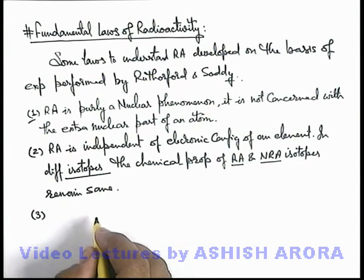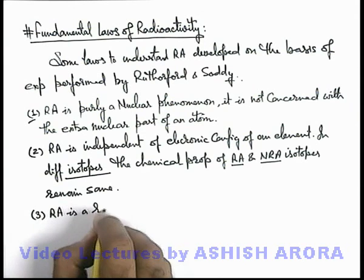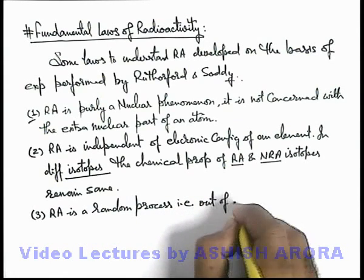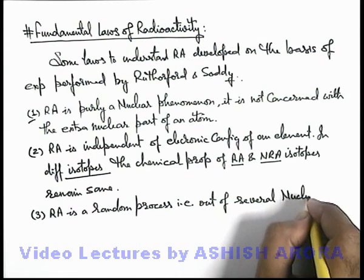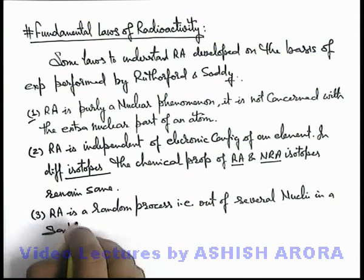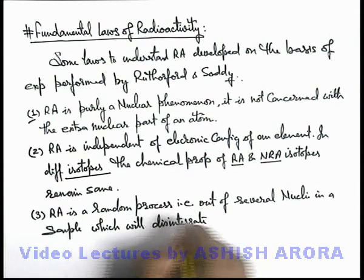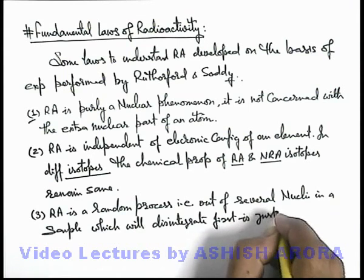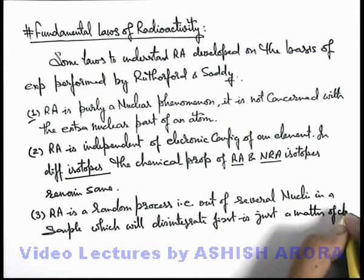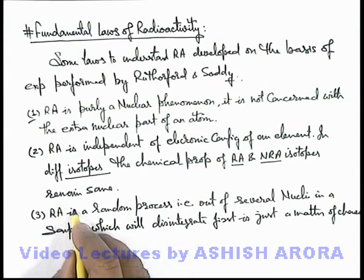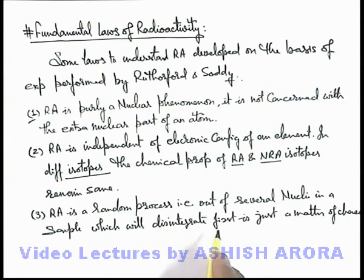Point number 3: radioactivity is a random process. That is, out of several nuclei in a sample, which will disintegrate first is just a matter of chance. We cannot directly define which nucleus will disintegrate first and which will disintegrate second in a group of nuclei. This is purely a random process; it can only be studied with the help of laws of probability, but there is no exact way by which we can define in an absolute manner how the radioactive process goes on.